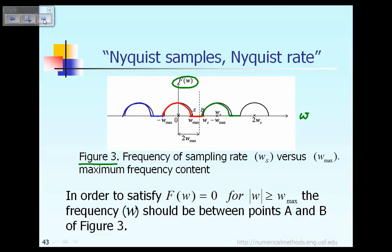If you look at this figure, this is called the maximum frequency, omega sub max. This represents negative of omega max. The frequency of the sample, right here, we call it W sub s. W sub s represents the frequency of the sampling rate, and W sub max is the maximum frequency here.